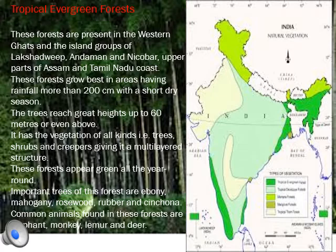Tropical evergreen forests require 200 centimeters of rainfall, and trees can reach a height of 60 meters and above. These forests have very rich vegetation of all kinds — trees, shrubs, creepers — giving multi-layered structure. Since this region is warm and wet throughout the year, they are evergreen. Commercially important trees are ebony, mahogany, rubber, and rosewood. Common animals found here are elephants, monkeys, deer, lemur, snails, scorpions, bats, and many types of birds.